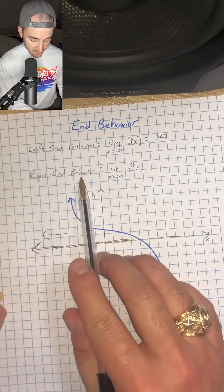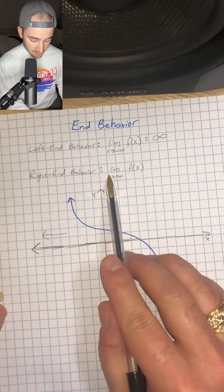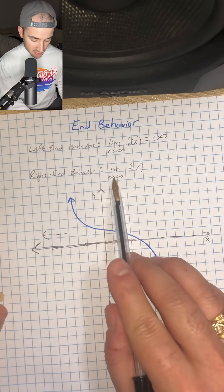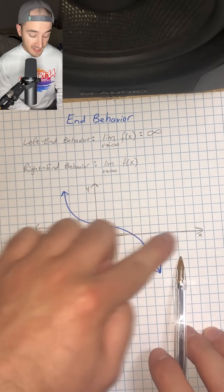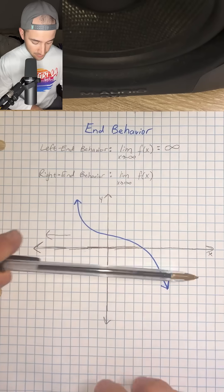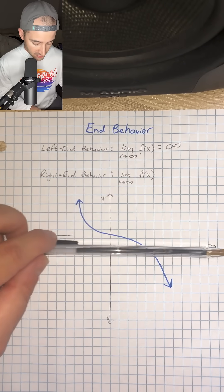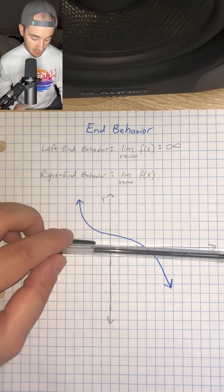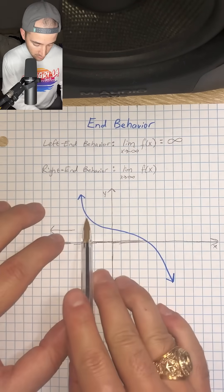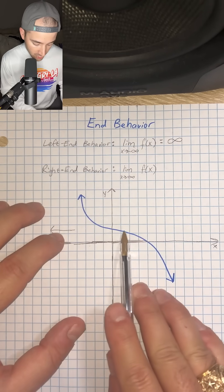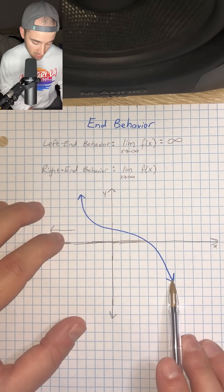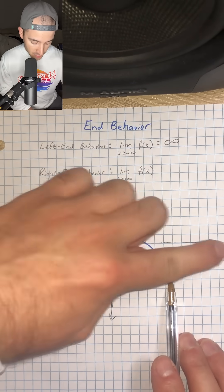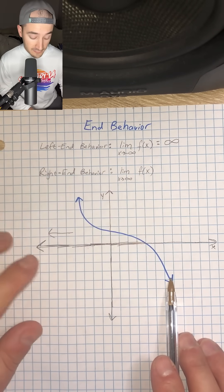Now for the right end behavior, it's really similar, except the limit is as x is approaching positive infinity, meaning we're going to the right on our x-axis. And as we approach positive infinity, what is our function doing? In this case, as we move to the right on our graph, our function is decreasing or going down as x is approaching positive infinity.